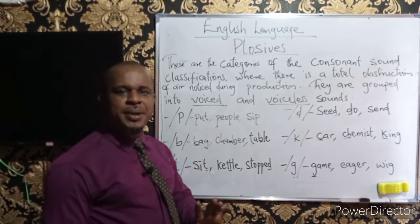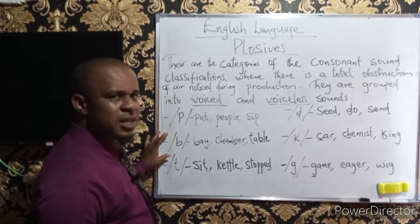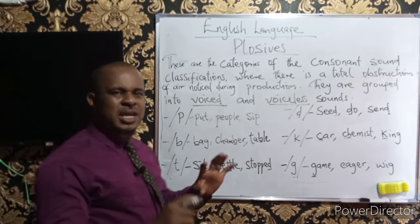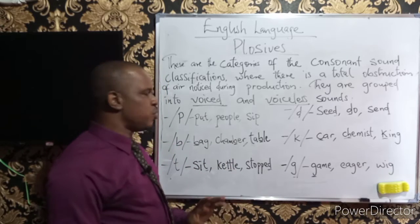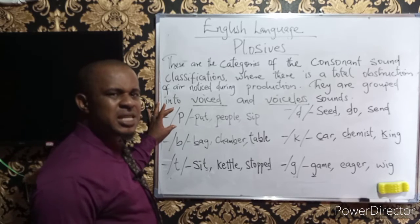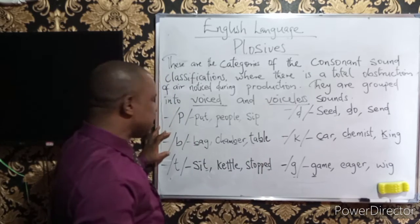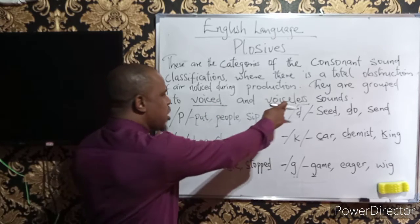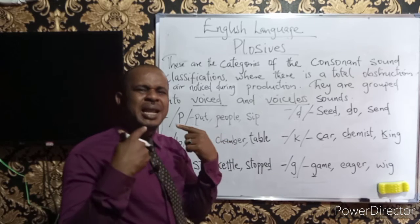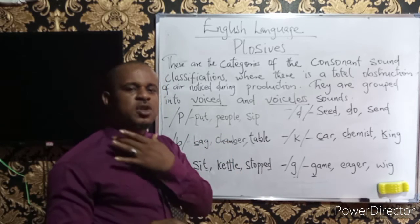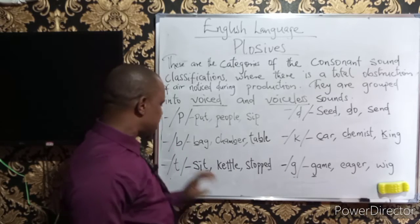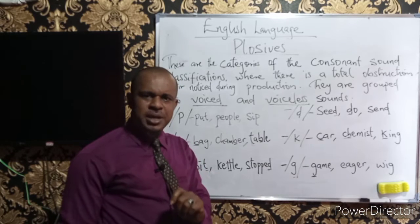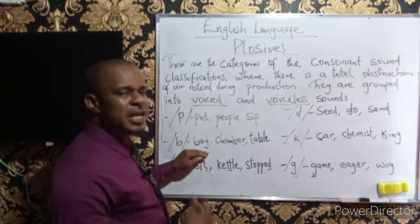The next one is /b/. If you look at these two critically, you notice that the articulation in the production of these two sounds is actually the same, but the only difference is that /p/ is the voiceless sound while /b/ is the voiced aspect of it. The first one is voiceless because there is little or no vibration at all noticed in your vocal cord.